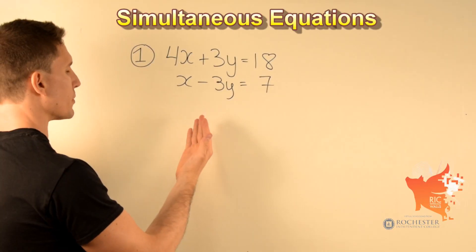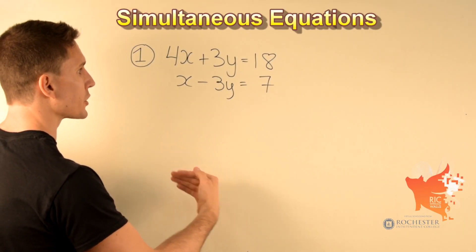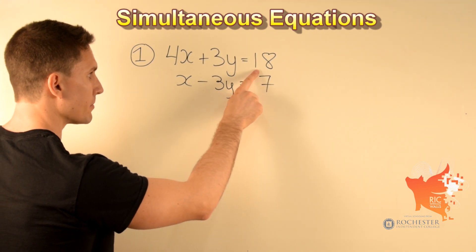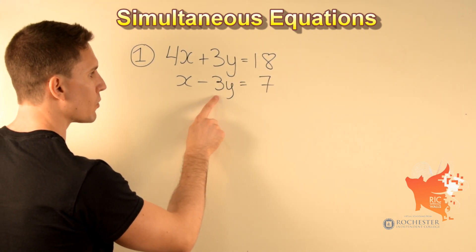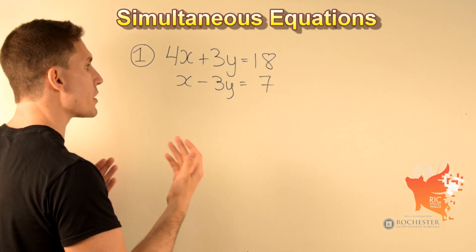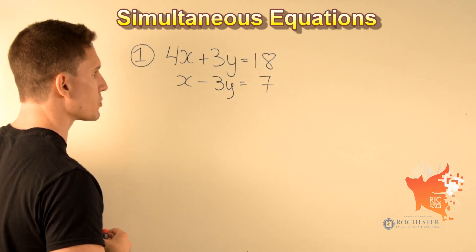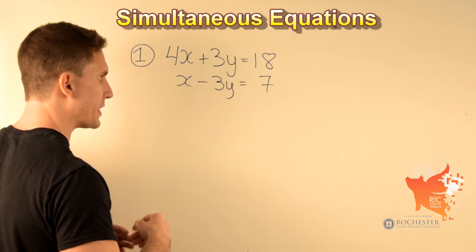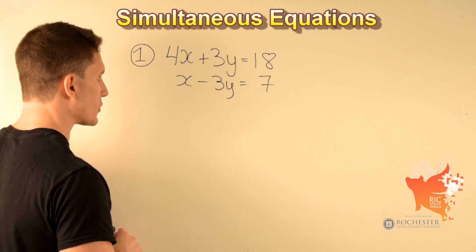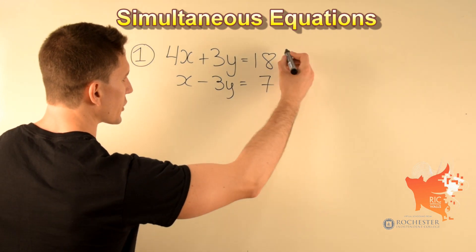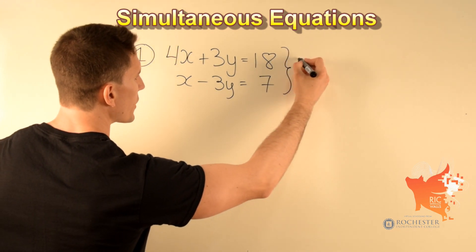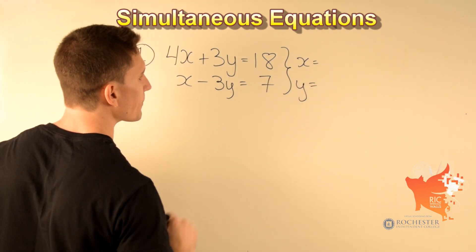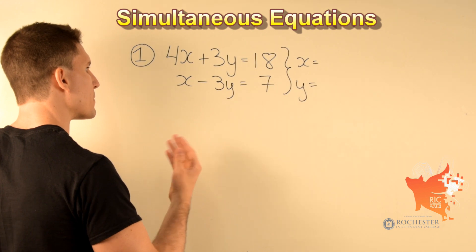In this first example we have been given the simultaneous equations 4x plus 3y equals 18 and x minus 3y equals 7. This is simultaneous equations because we have to solve two equations simultaneously, meaning at the same time. To solve these really means to find the value of x and also the value of y.